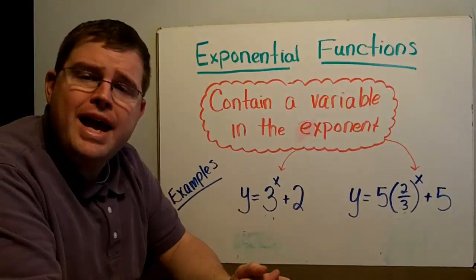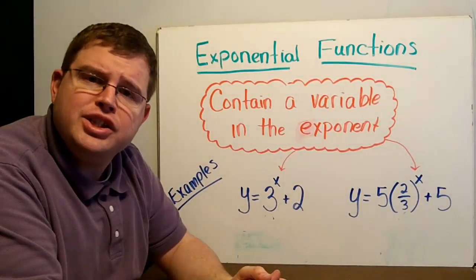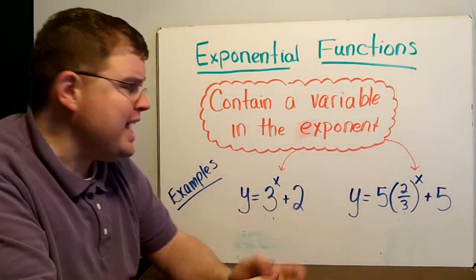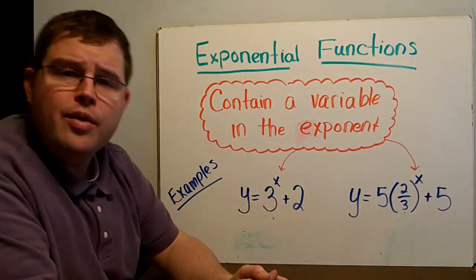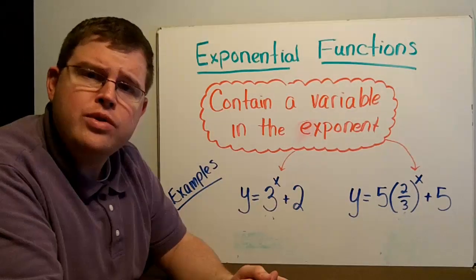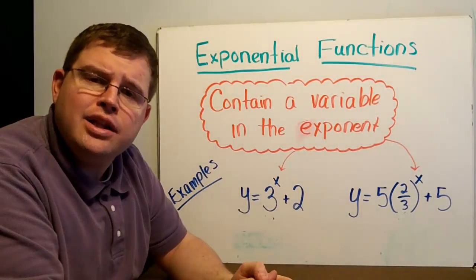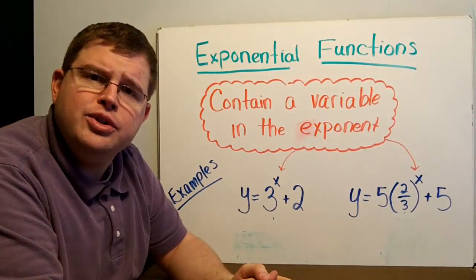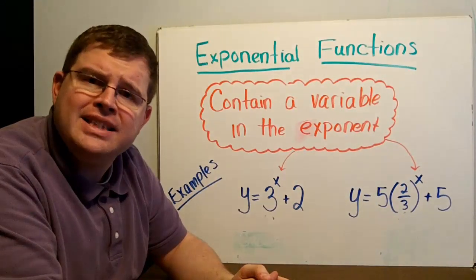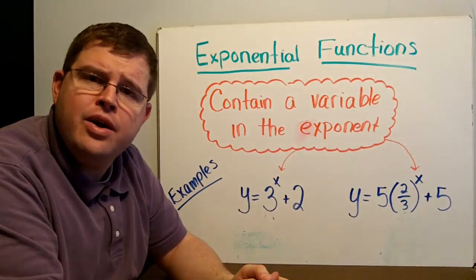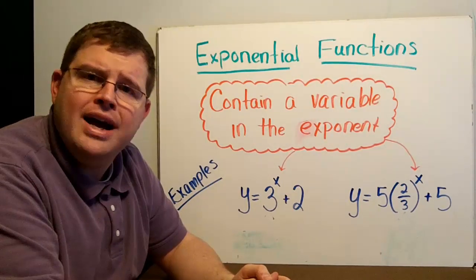An exponential function is simply a function where the exponent is a variable. We can have growth or we can have decay. The line that the graph gets closer and closer to but never touches is called the asymptote, denoted on the graph by a dashed line. This is everything you need to know about graphing exponential functions.